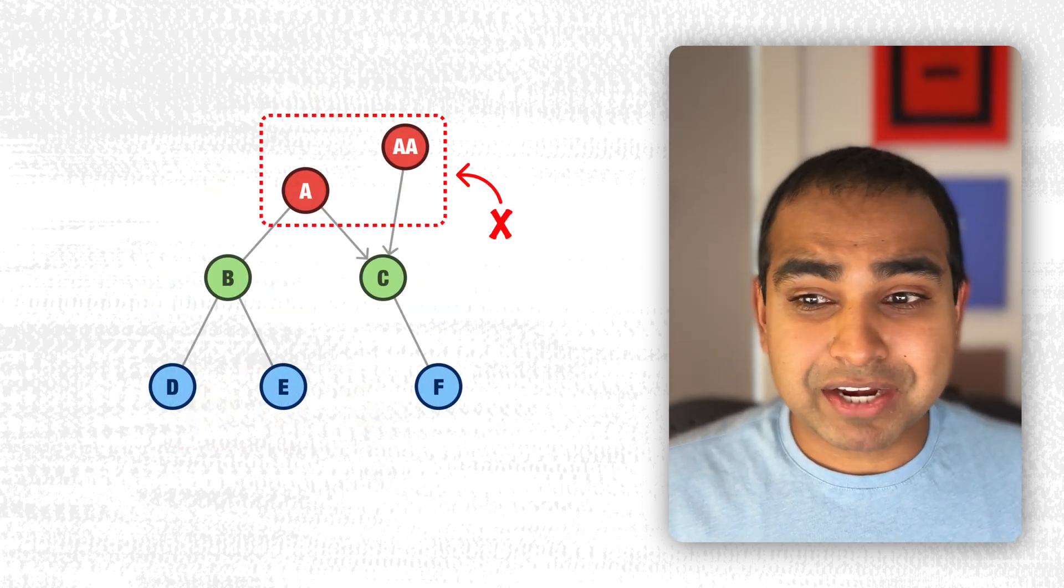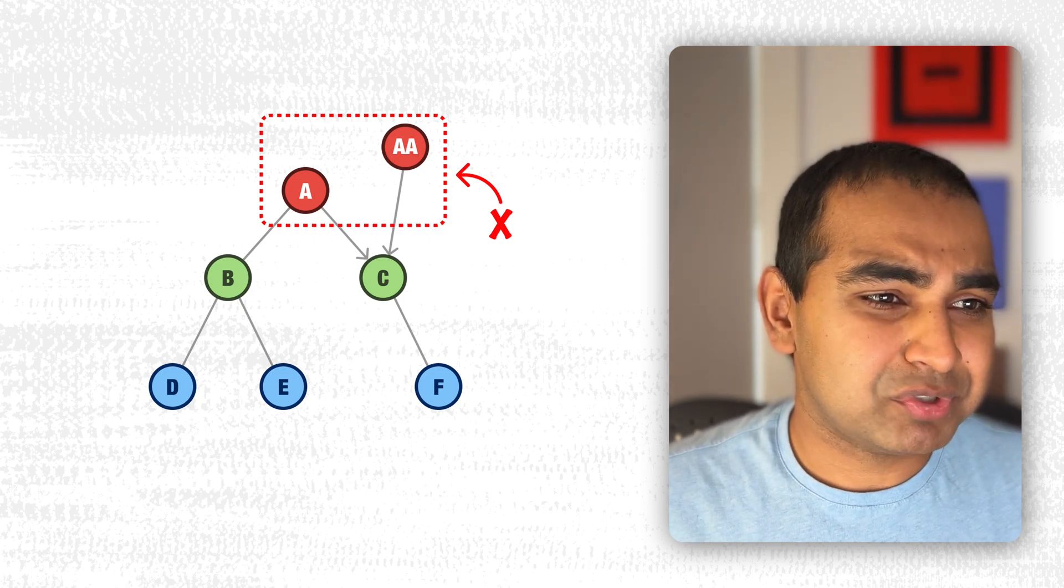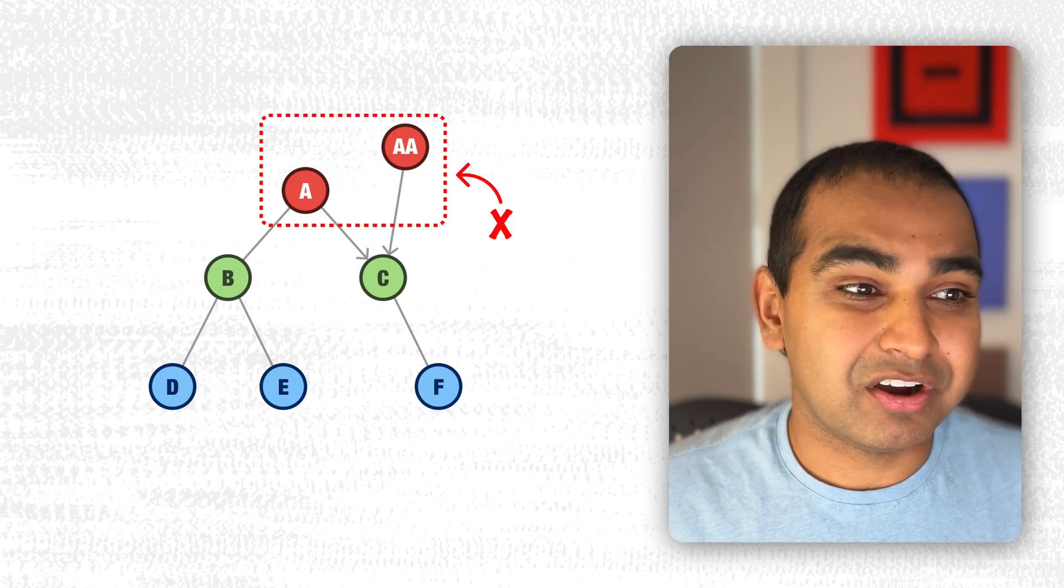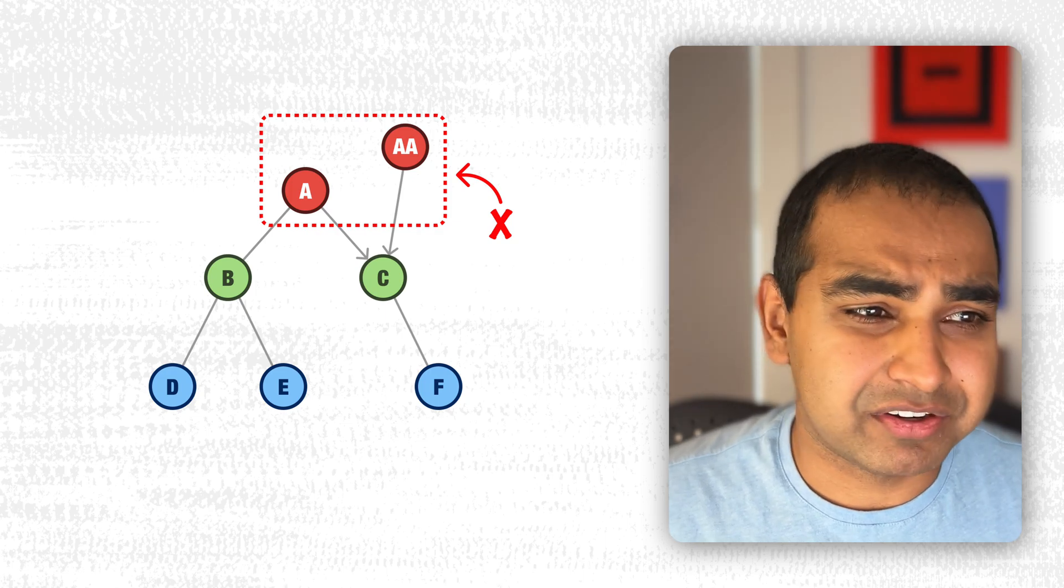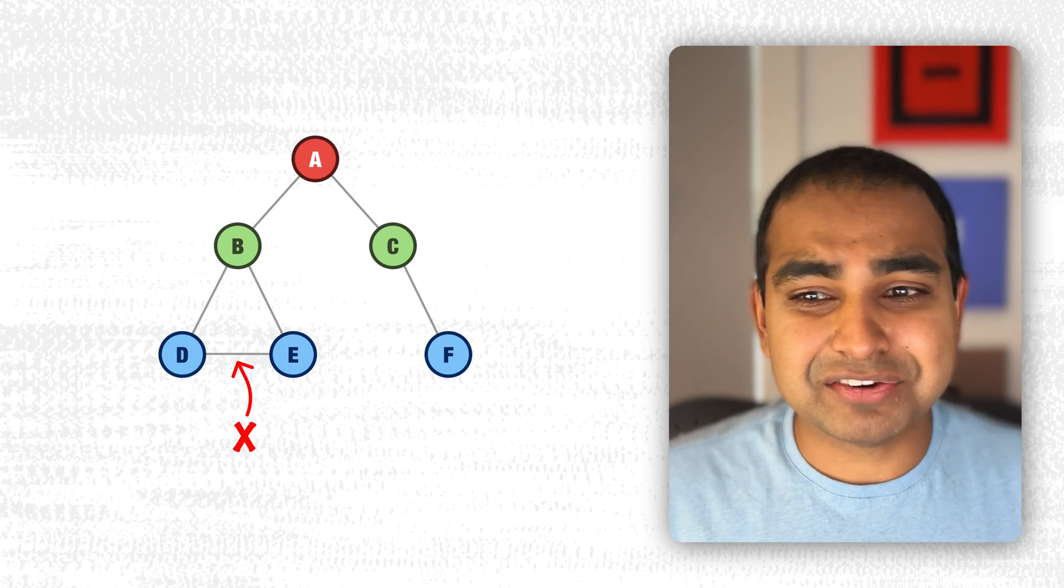The second rule is that a binary tree must have only a single root node. Here you can see that both A and AA are considered root nodes because they both start off without any parent of their own, and that's not allowed in a binary tree world. So only a single root node.